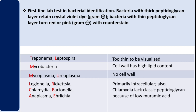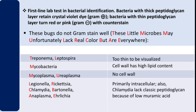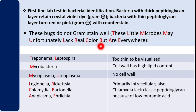So how do you remember these bacteria? There is a mnemonic: 'These bugs do not Gram stain well.' The phrase is: 'These Little Microbes May Unfortunately Lack Real Color But Are Everywhere.' T is for Treponema, L for Leptospira, M for Mycobacteria, M for Mycoplasma, U for Ureaplasma, L for Legionella, R for Rickettsia, C for Chlamydia, B for Bartonella, A for Anaplasma, and E for Ehrlichia.